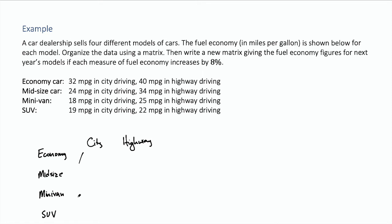So that creates our matrix for us. Economy cars have 32 miles per gallon city driving and 40 for highway, midsize of 24 for city and 34 for highway and so forth, just placing that information in our matrix. So this matrix here is a way to organize this information.